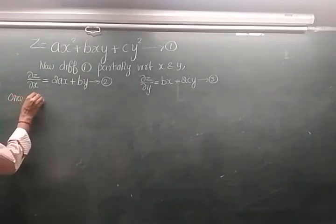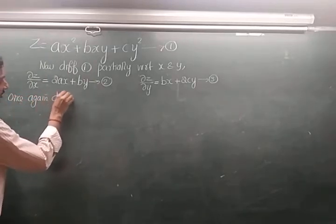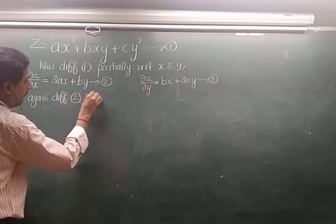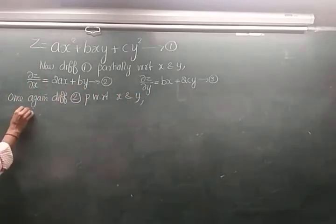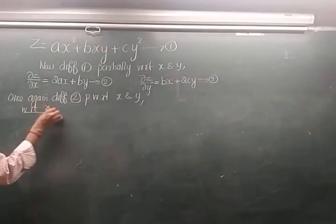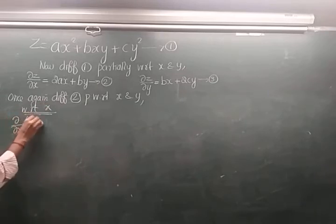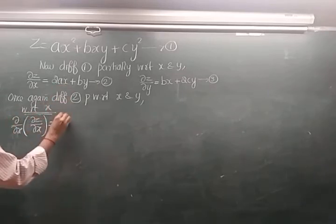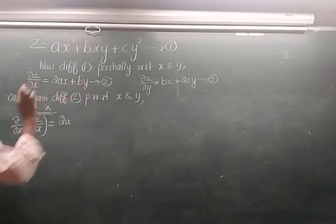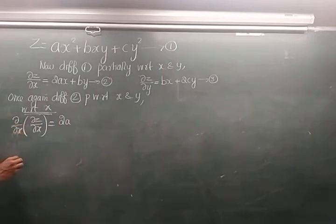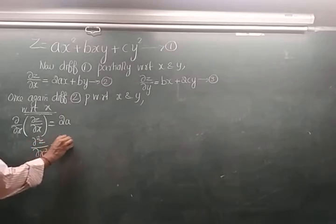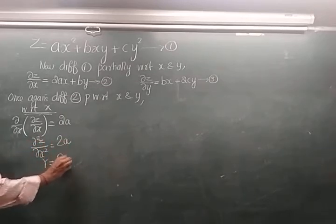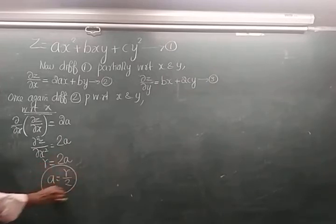Differentiate equation 2 partially with respect to x. The left-hand side becomes ∂/∂x of ∂z/∂x, and the right-hand side becomes 2a, since x gives 1 and by has no x so gives 0. Therefore ∂²z/∂x² = 2a, which in standard notation is r = 2a, giving us a = r/2.